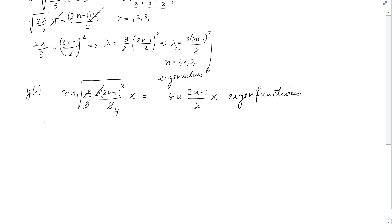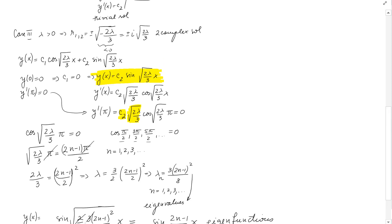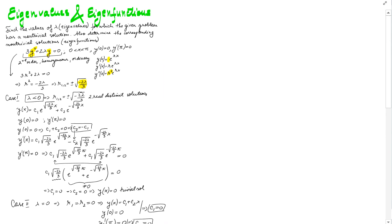We can write the general solution as the sum from n = 1 to infinity of cₙ·sin((2n−1)x/2), if we were to write all solutions of our original problem. I hope this helps.